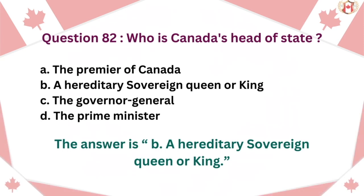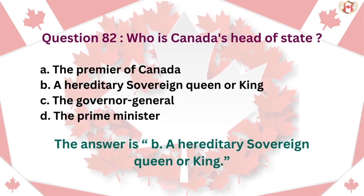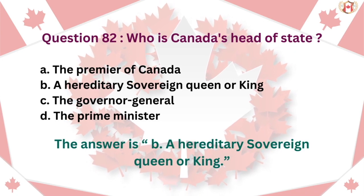Question 82: Who is Canada's head of state? A. The Premier of Canada, B. A hereditary sovereign queen or king, C. The Governor General, D. The Prime Minister. The answer is B. A hereditary sovereign queen or king.